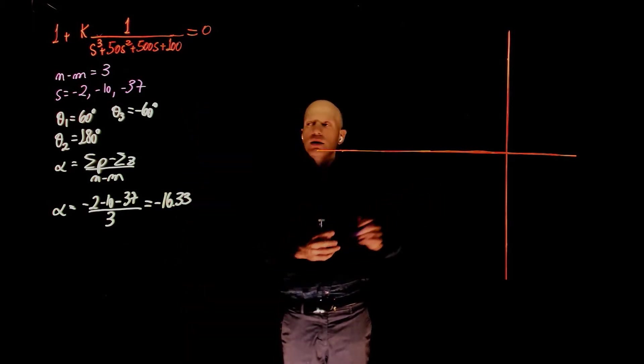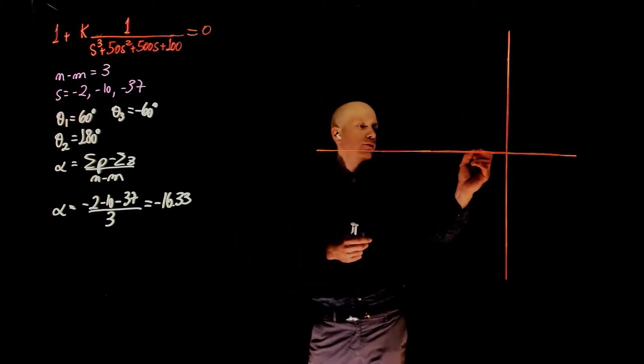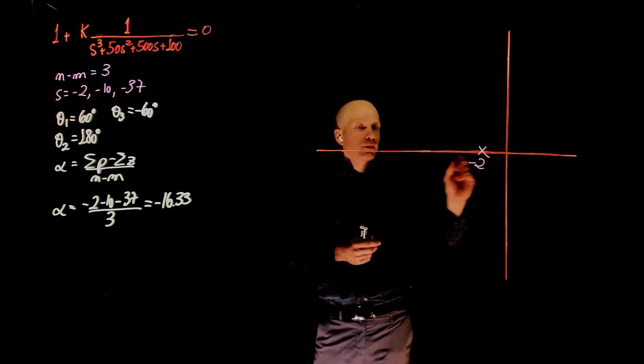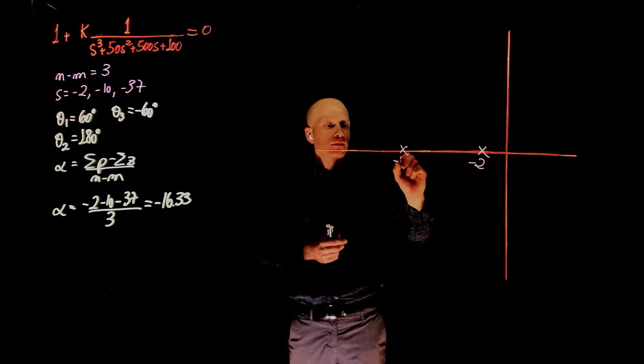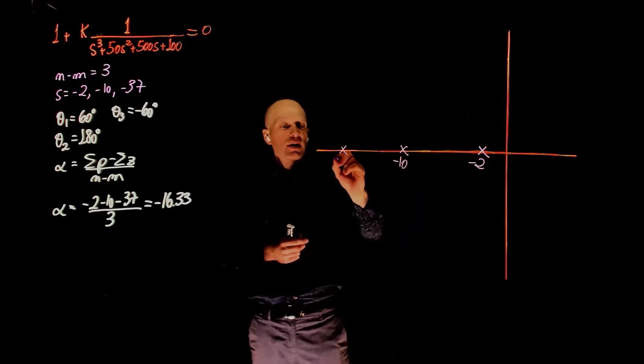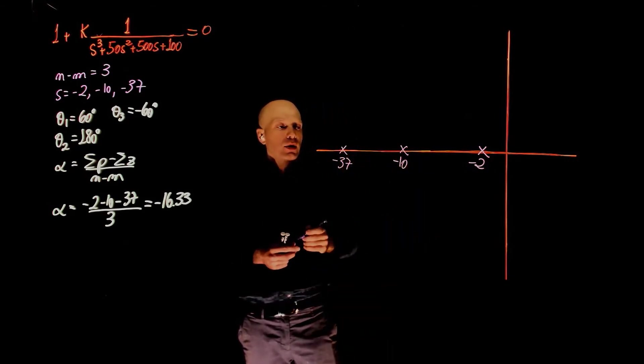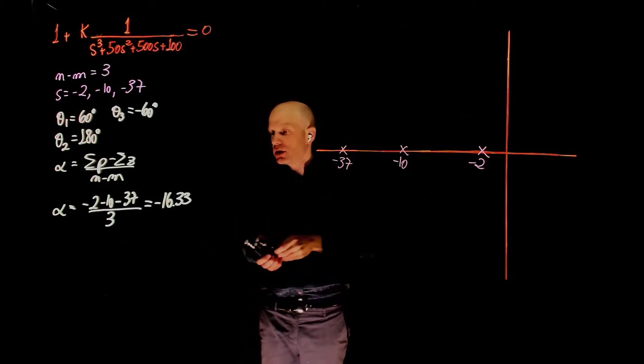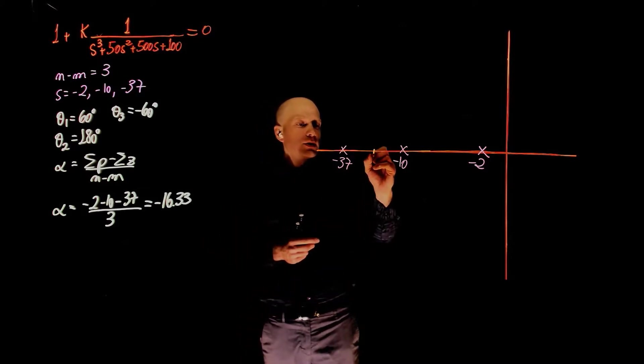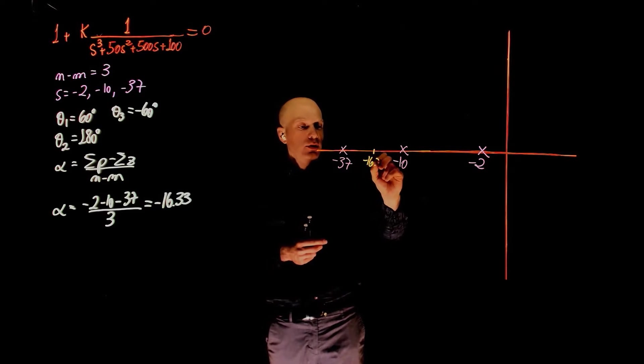Let's now locate the poles on the S-plane. We have three poles: negative 2, negative 10, and negative 37. The centroid of the asymptotes is at negative 16.33. Let's place it around here, negative 16.33. This is the value of alpha.